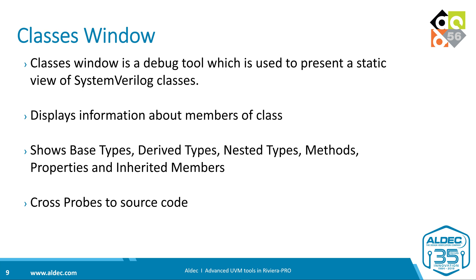The next feature is not specifically for UVM, but it helps with the debug of UVM environments — it's any SystemVerilog class. We have a dedicated window to view SystemVerilog classes inside the simulation tool. You can see information about the class members, the base types, the derived type, any nested types, methods inside the class, properties, and any inherited members. It can also cross-probe to the source code, so you can easily navigate from one class to the other or to the source code.